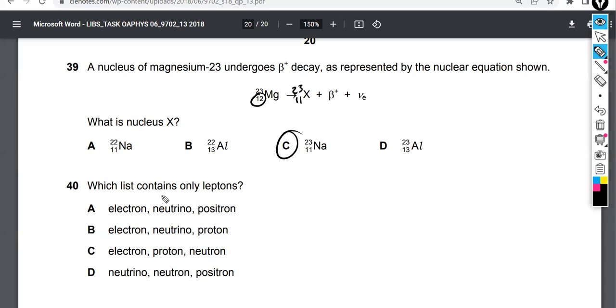Question 40 says: which list contains only leptons? The learning objective is to appreciate that electrons and neutrinos are leptons. So an electron and a neutrino are leptons.